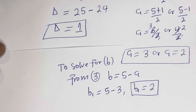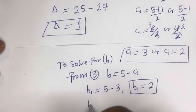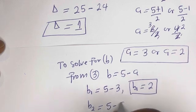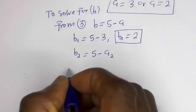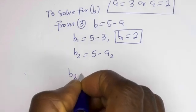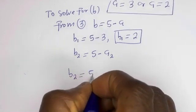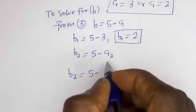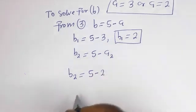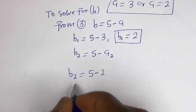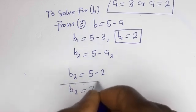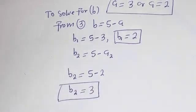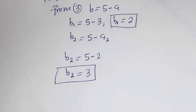Also, b2 is equal to 5 minus a2, where a2 is 2. Therefore b2 is equal to 5 minus 2, which is 3. This is the value of b2.